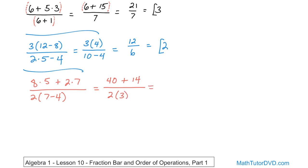Now we go to the next step. What is 40 plus 14? That's the only thing there's left to do in the top. We have to take care of that first. We get 54. And on the bottom, two times three is six. Then finally, you have a fraction. 54 divided by six. You can do that evenly is going to give you nine. That's the final answer.